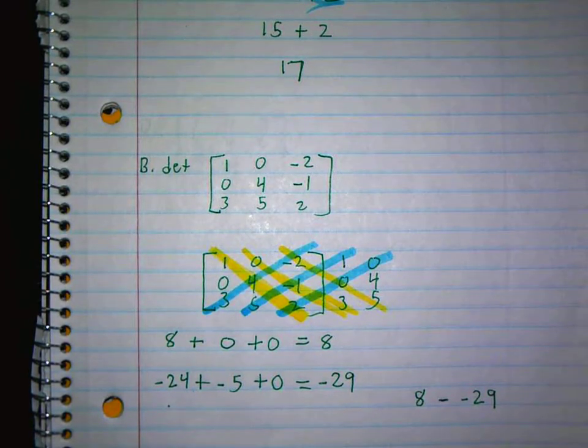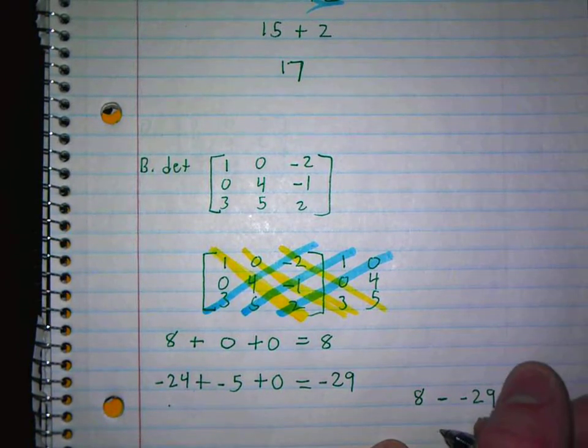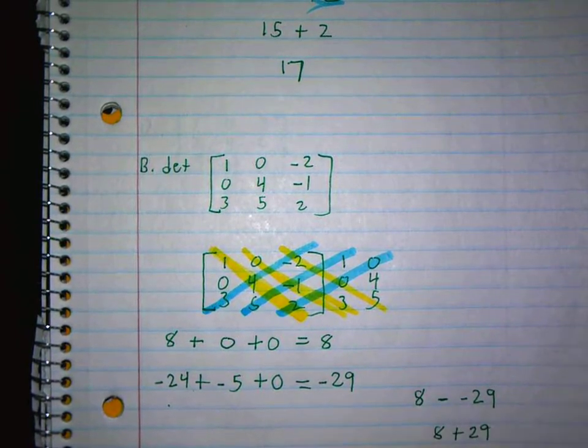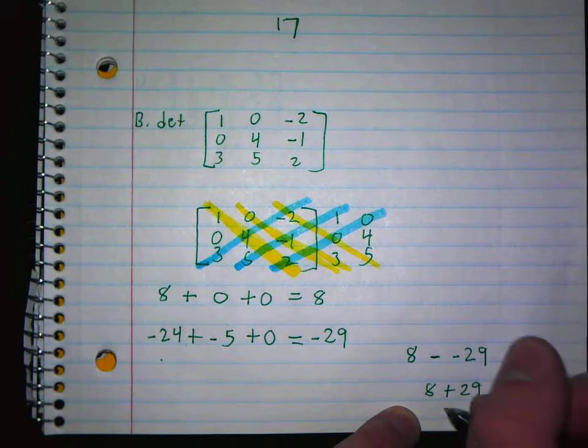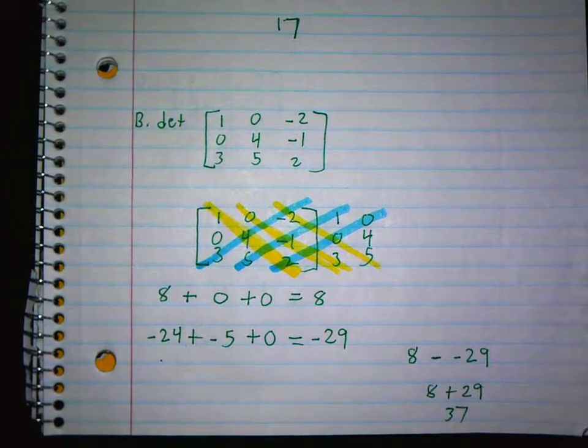These two numbers you always subtract in that order. Two negatives make a plus. 37, right? Yeah, 37.